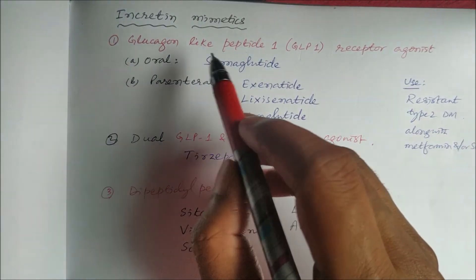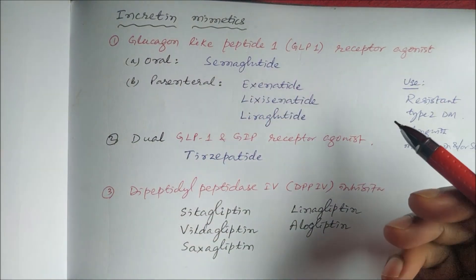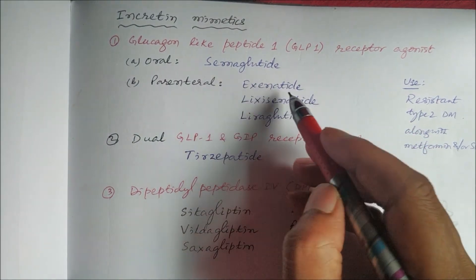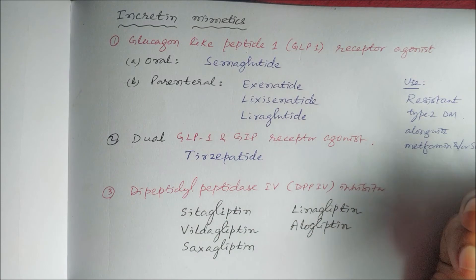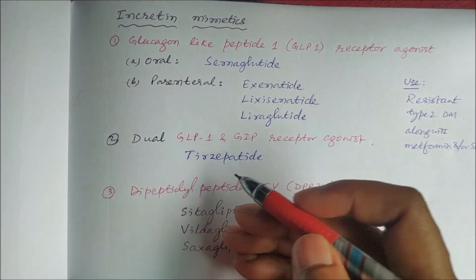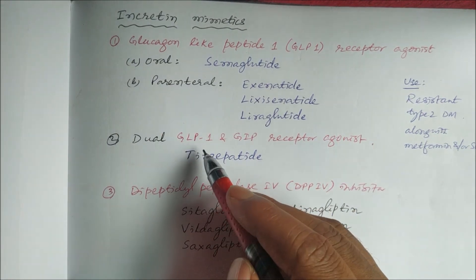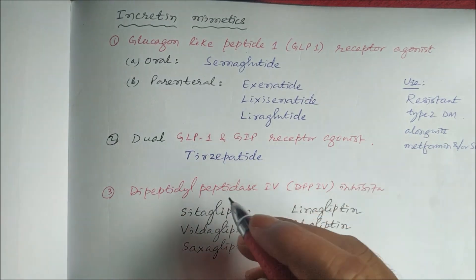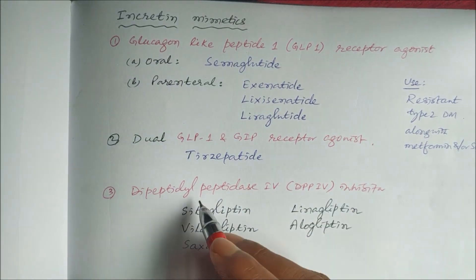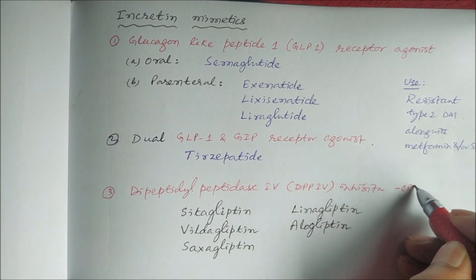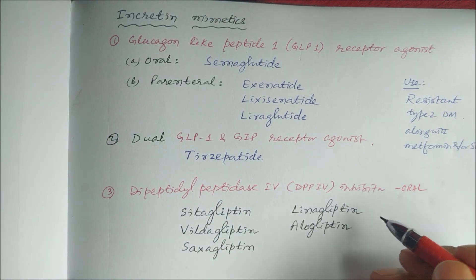GLP-1 receptor agonists include one oral drug — semaglutide — and several parenteral drugs: the first was exenatide, followed by lixisenatide and liraglutide. In 2021-22, the dual GLP-1/GIP receptor agonist tirzepatide was approved by the FDA. This is the most recent drug. DPP-4 inhibitors are used orally and include sitagliptin, vildagliptin, saxagliptin, linagliptin, and alogliptin.